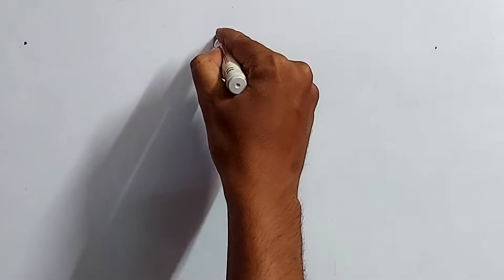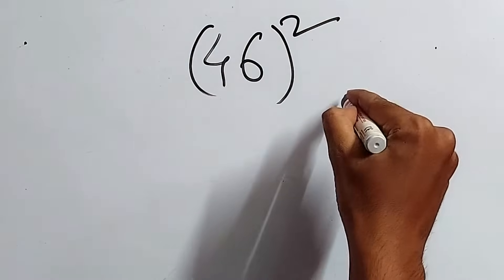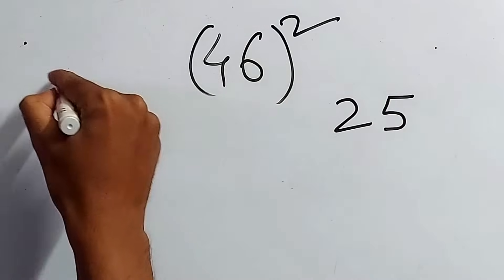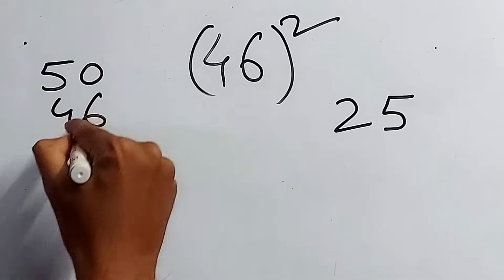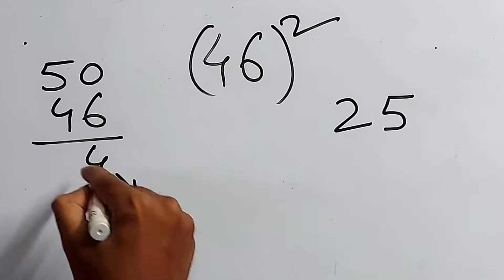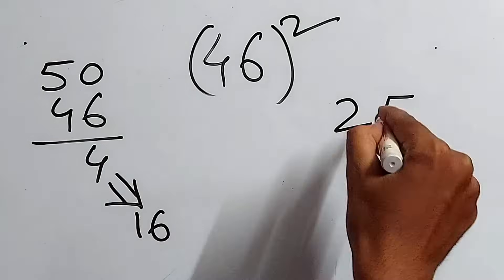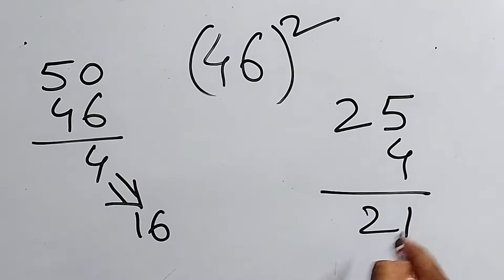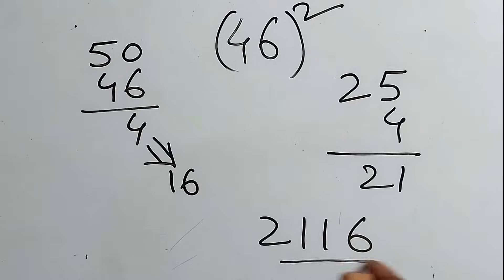That is 46 square. And the same way, just keep 25 somewhere. And, this 46 is, 50 minus 46 is 4. And, 4 4s are 16, right? So, simple thing. And, remove 4 from this. That is 21. So, 2, 1, 1, 6 is your answer. Got it?